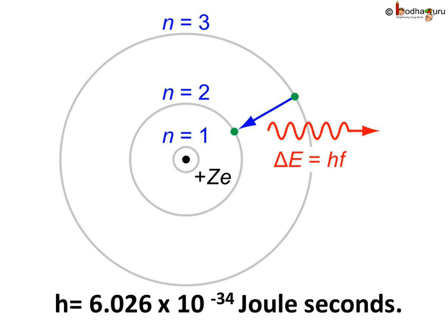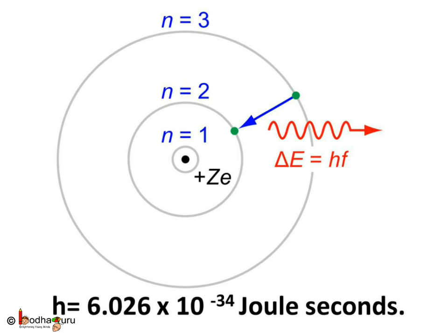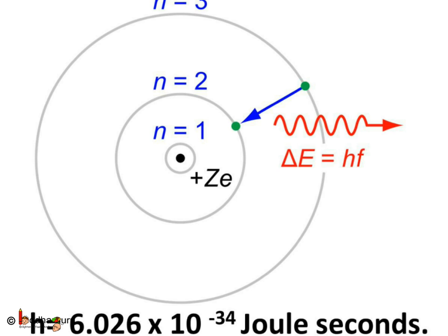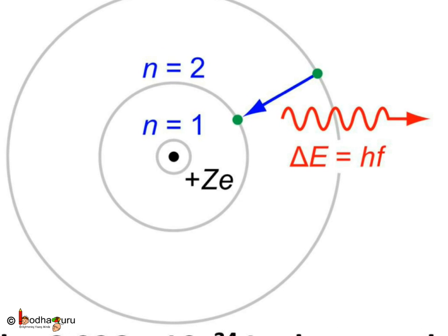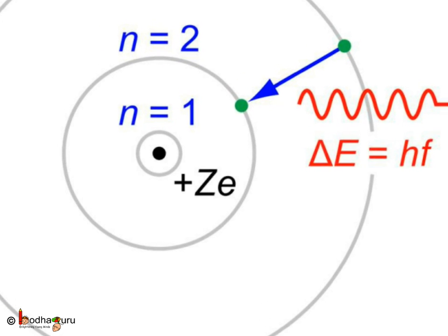Hence, red color having lower frequency has lower energy than the blue color which has higher frequency. Thus, Planck's theory suggested that the energy of light is proportional to its frequency and also showed that light exists in discrete quanta of energy.